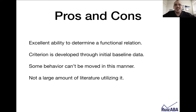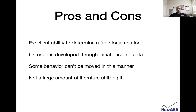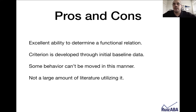The main pro of this design is its excellent ability to determine a functional relation, because the more phases you have where behavior is meeting criteria, the more confident you are. The criteria is developed through initial baseline data — there's no randomness. However, some behaviors can't be moved in this manner. In the old ABA literature, you'll find examples of decreasing cigarette consumption or decreasing problem behavior using a changing criterion. It's basically anything you want to systematically increase in correct responding or decrease in problem behavior, but there's not a large amount of literature utilizing the design.